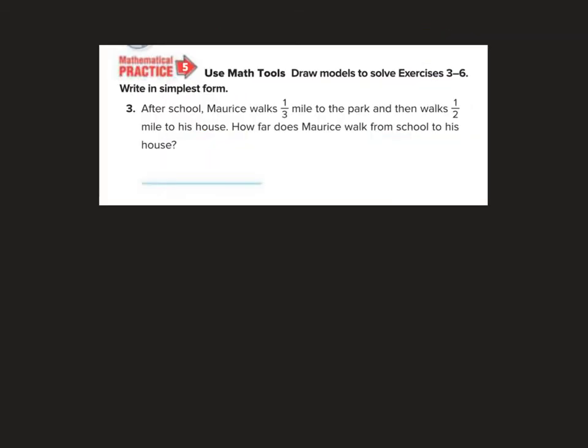Okay let's look at some more here. Use math tools, draw models to solve exercises three through six, starting with three, write in simplest form. After school Maurice walks one third of a mile to the park and then walks half a mile to his house. How far does he walk from school to his house? Now I'm going to remind you of my friend the ten and two strategy for solving problems, because kids always get mixed up when there's a fraction there. So let's replace these fractions with ten and two and see if we can figure it out. If I replace it with ten and two, I would say after school Maurice walks ten miles to the park and then walks two miles to his house. How far does Maurice walk from school to his house? Notice how that makes things a lot easier and you say oh well he's walking twelve miles. That's how we're going to know, well I added ten and two so now I need to add one third and one half.